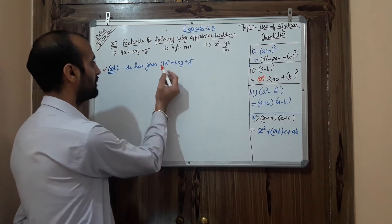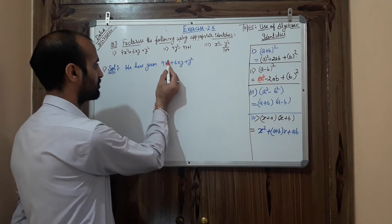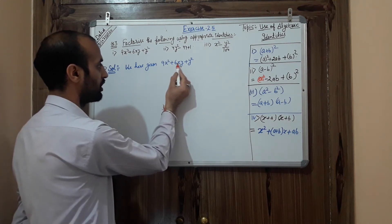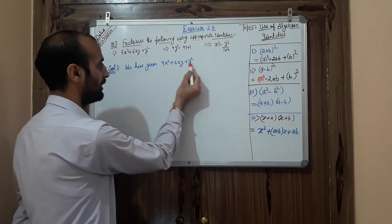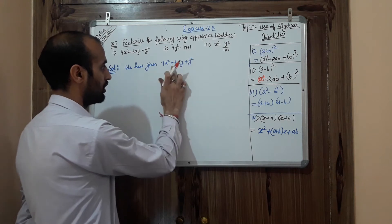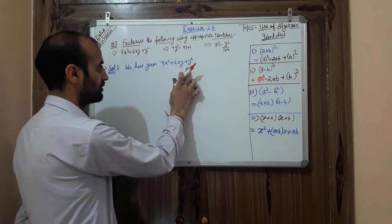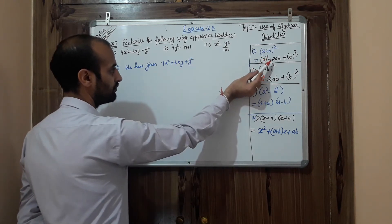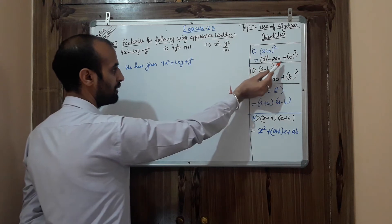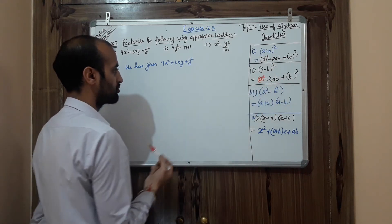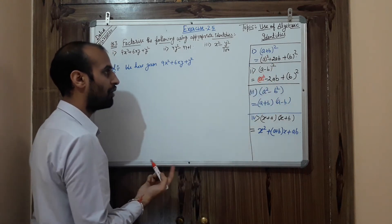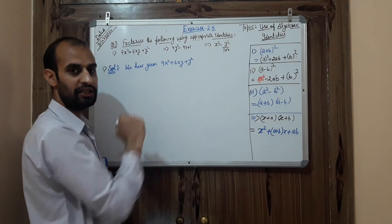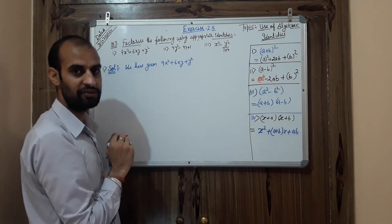Look at the first term: 9x² — something is squared. The middle term 6xy — two terms are multiplied. Then y² — all signs are positive. So it looks like the first identity: a² + 2ab + b². Now the important step is how to convert this question into the form of the identity.